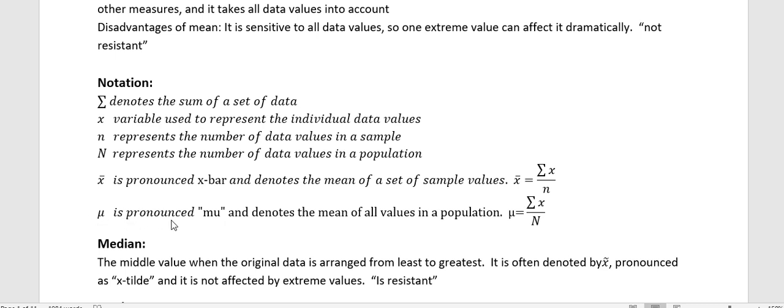And μ (mu) is the notation we use to denote the mean of a population. Notice that when you're working with a population you're dividing by N which represents the data values in a population. So they're very similar formulas but just replacing the small lowercase n with the uppercase N.